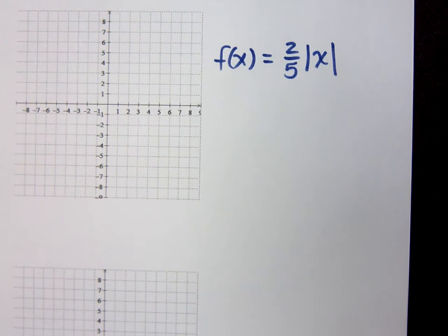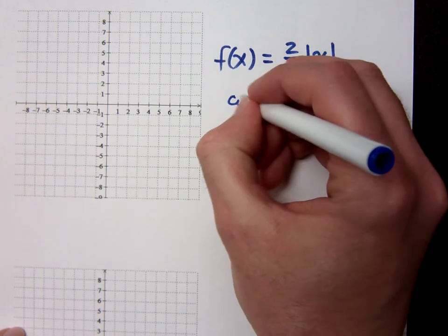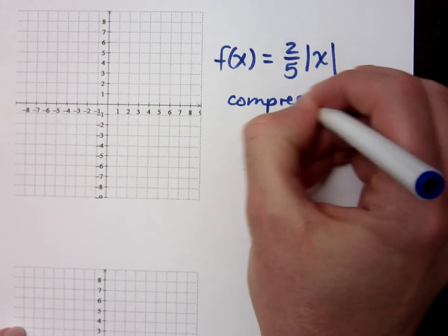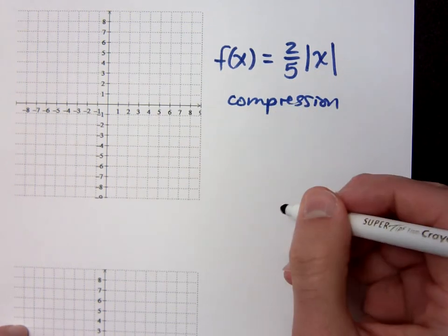Okay, we already talked about this guy before. This guy's the absolute value function. The two-fifths means that I have a compression. Now, I want to show you something very neat about absolute value, guys.